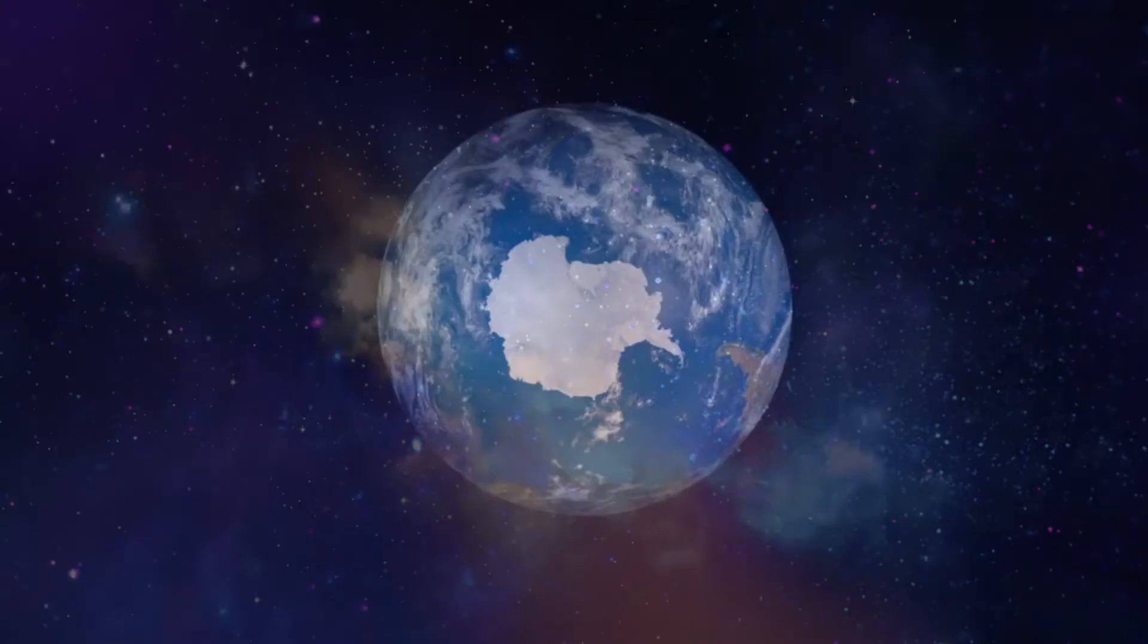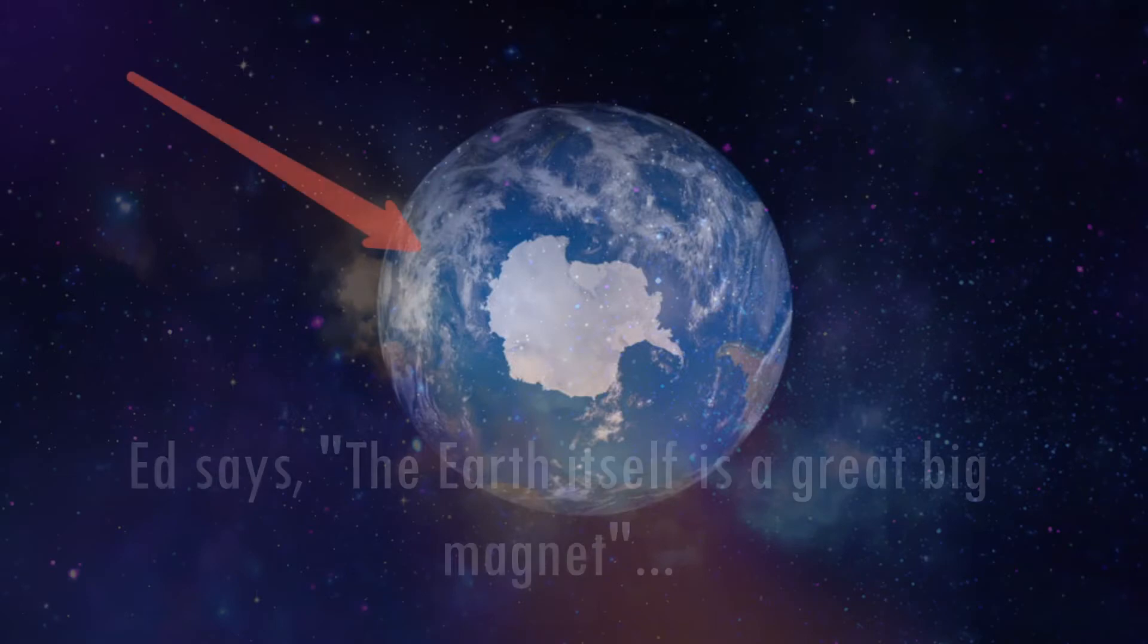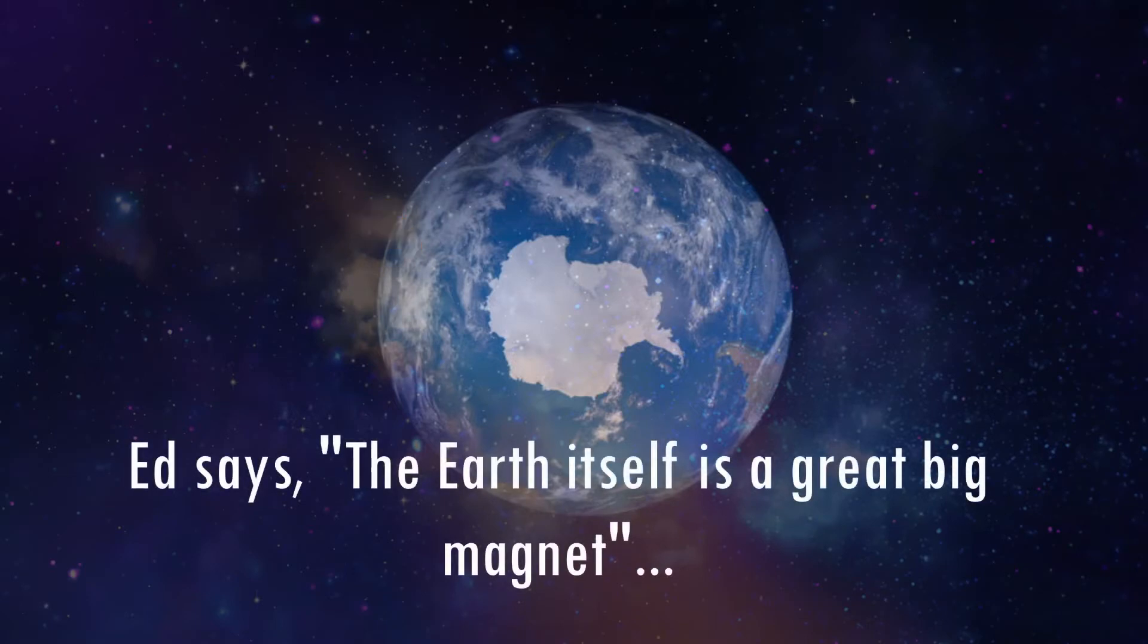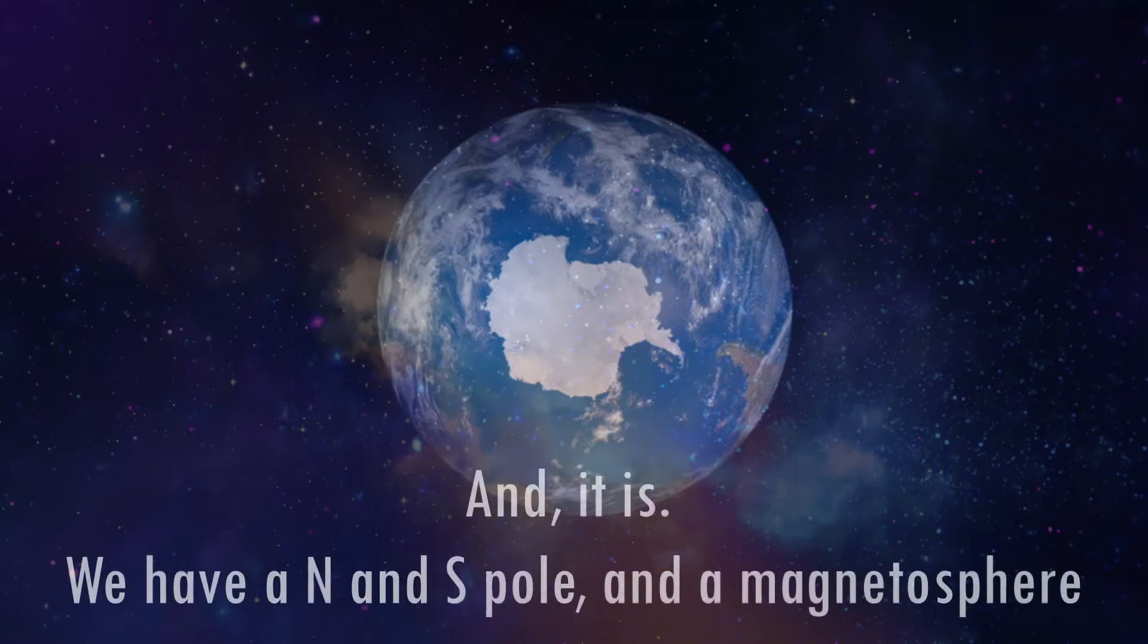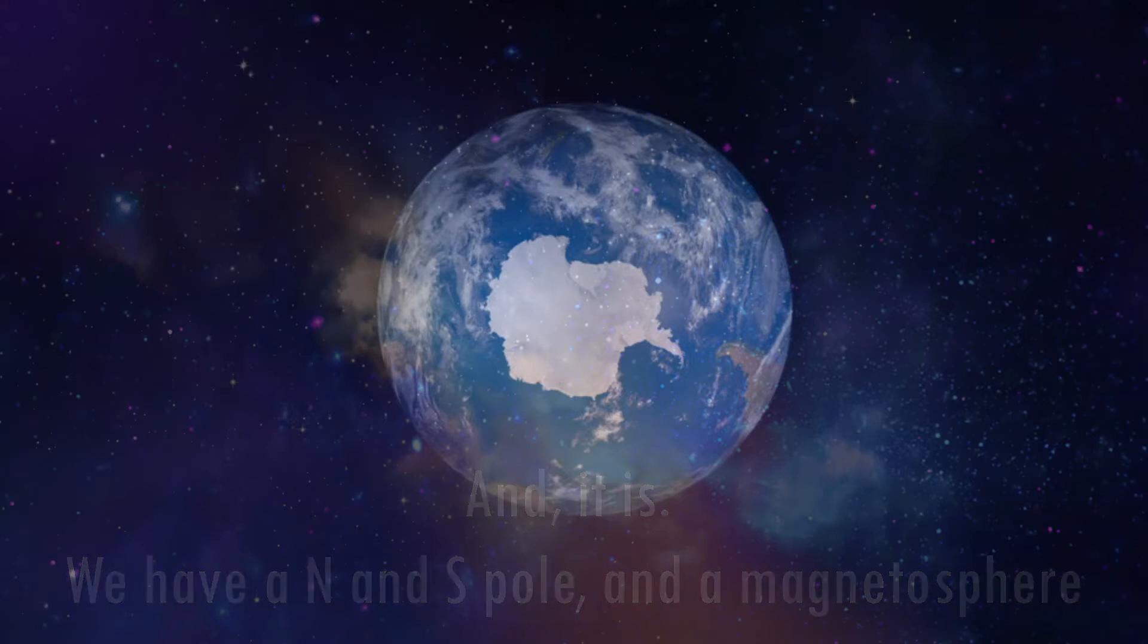One of the things I look for with symbols, pictures, things like that, is additional context. And with that, we have it. He says, the Earth itself is a great big magnet. And it is. We have a North and South Pole. We have a magnetosphere. We generate electricity from a spin. And we are a magnet. And it is at this point where I began to understand, in context with other concepts, exactly what he was showing.